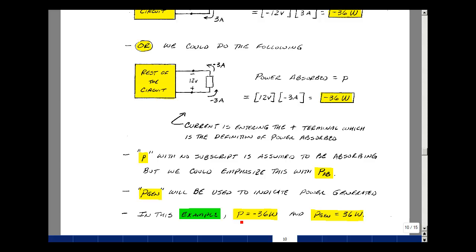So as last example, the power absorbed was minus 36 and the power generated was equal to 36 watts. These are some of the lessons of passive sign convention.